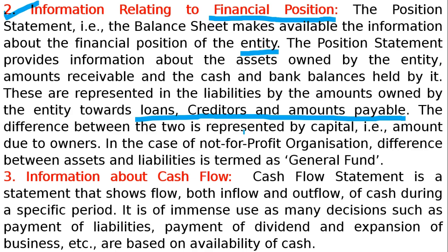The difference between the two — assets और liabilities का जो difference होता है — that is termed as capital, i.e. amount due to owners, मालिक को जो पैसे देना होता है. And in case of a not-for-profit organization, the difference between assets and liabilities is termed as general fund — it is also called capital fund. General fund या capital fund — वो NPO organization का capital fund होता है.